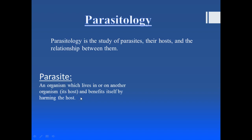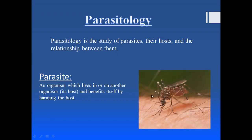For example, the classical example is Plasmodium. A female Anopheles mosquito bites a human being, and the Plasmodium enters the human body, then enters the red blood cell and causes its lysis. The Plasmodium multiplies in numbers — it gains its benefit by harming the host by causing lysis of the red blood cells. So a parasite is an organism that gets its benefit by harming the host.